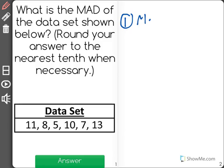Step one is we need to find the mean of the data set. So if you remember, we start by adding all of these numbers together. And when I do that, you'll see that I get a total of 54.